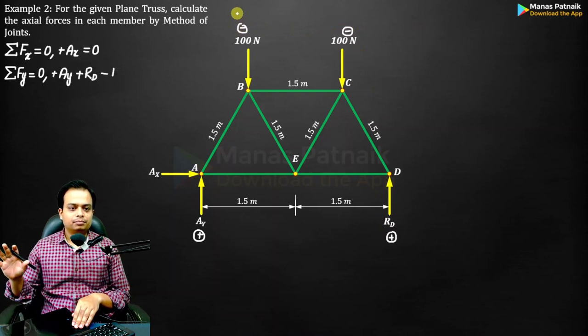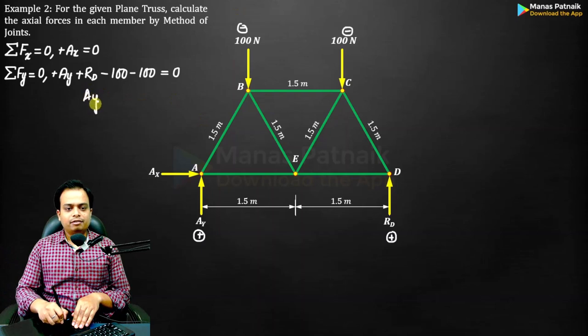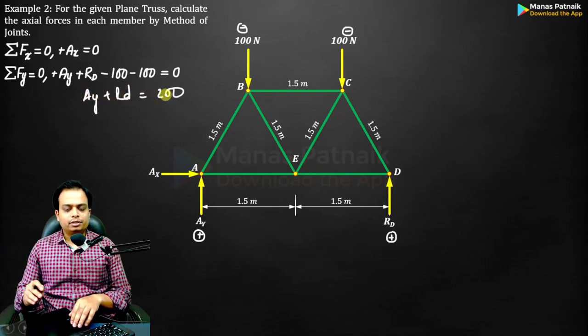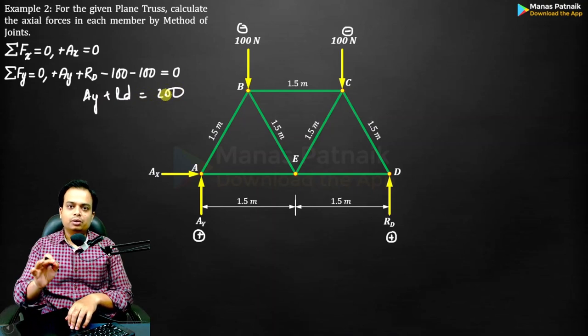So you simply have the equation: AY plus RD equals 200. There is one equation and two unknowns, so it cannot be solved further by itself.